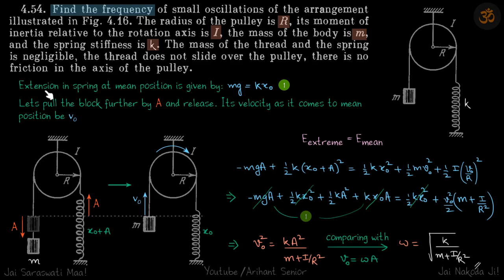Extension in spring at mean position: when the block was at equilibrium, let's say the extension was x₀, so we can say mg = kx₀. Now let's pull the block further by distance a and release.